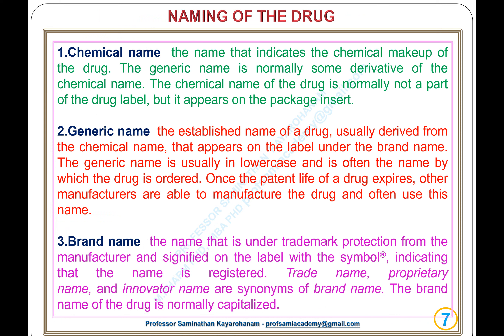Naming of the drug. Six names are used for drugs, but only two — the brand name and generic name — are used for commercial purposes. 1. Chemical name: the name that indicates the chemical makeup of the drug; the generic name is normally some derivative of the chemical name and appears on the package insert. 2. Generic name: the established name of a drug, usually derived from the chemical name, that appears on the label under the brand name. The generic name is usually in lower case and is often the name by which the drug is ordered. Once the patent life of a drug expires, other manufacturers are able to manufacture the drug and often use this name.